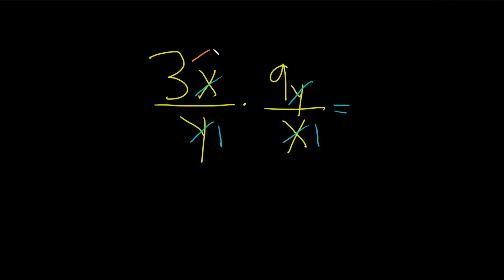So we do 3 times 9, which is 27, over, down on the bottom we have 1 times 1, which is just 1. So we end up with 27 over 1, which is 27.